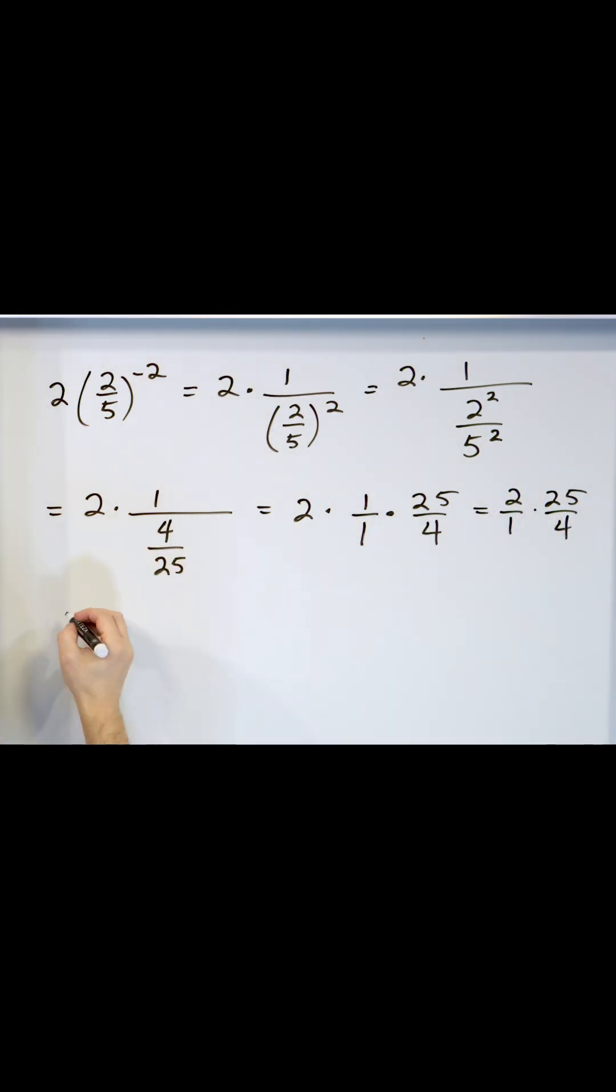Now you multiply the numerators together, giving you 50. Multiply the denominators together, giving you 4.